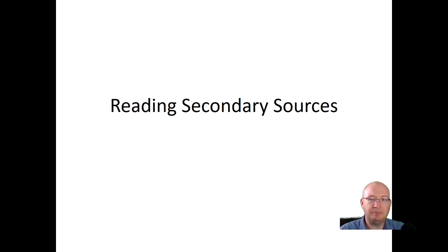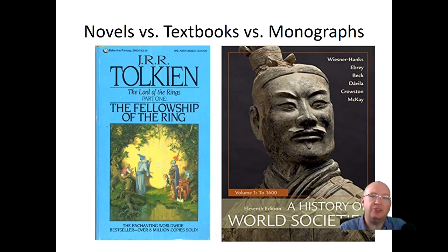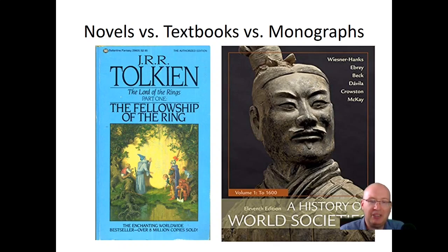The second thing I need to talk about is some different secondary sources and something that people confuse with a historical secondary source — and that is novels. Now, you could write a history of literature or a history of a particular novelist and use novels as a kind of primary source. That's fine. But a novel is a work of fiction, talking about events that did not happen, and everyone knows it's fiction. It doesn't pretend to be something else.